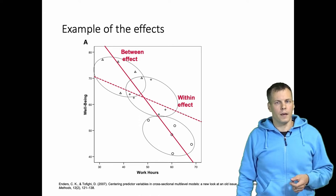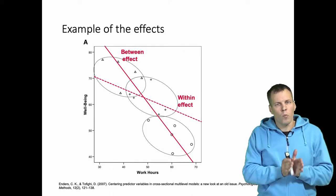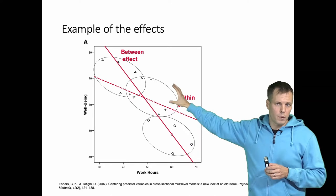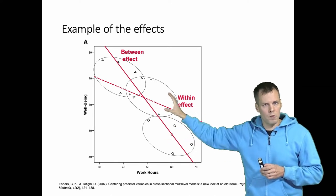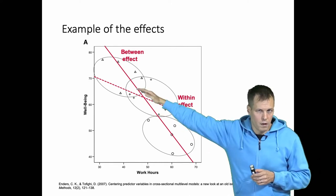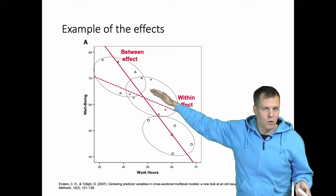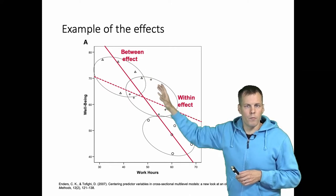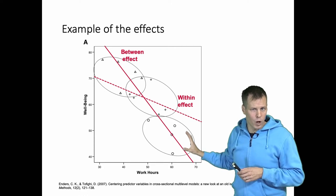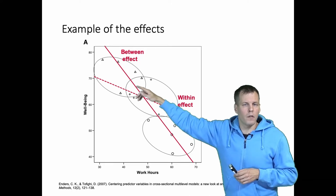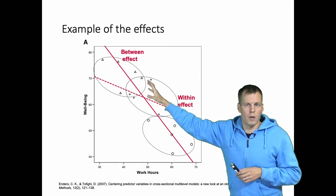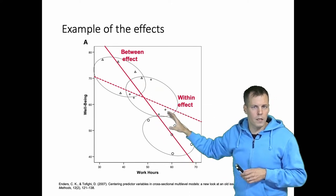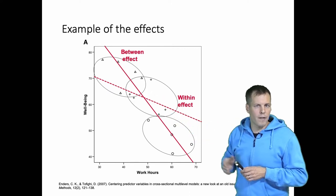The within effect tells how changing your work hours influences your well-being. It's a regression line obtained when we ignore the differences between groups — we overlay the ovals on top of each other, eliminate all between-group differences, and run a regression line through the ovals. That line tells us the direction of an individual-level change. A person who is relatively high in well-being will not drop to the level of a low well-being person regardless of how much they work, because the between effect captures stable constant differences between people.